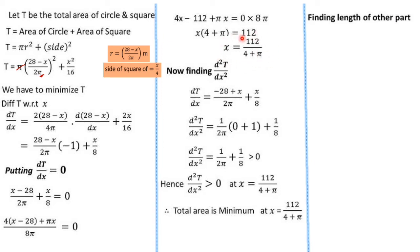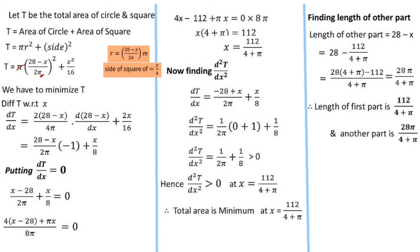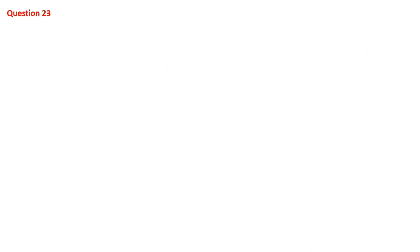The length of the first part (for the square) is x = 112/(4 + π) meters. The length of the second part (for the circle) is 28 − x = 28 − 112/(4 + π) = 28π/(4 + π) meters.